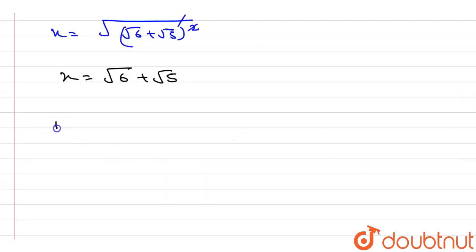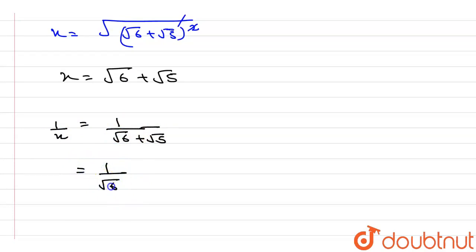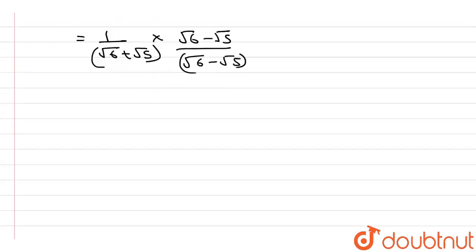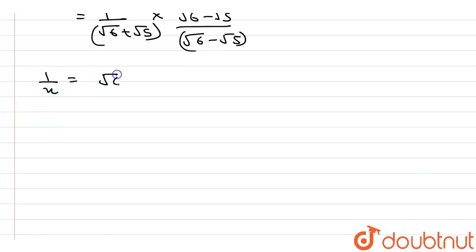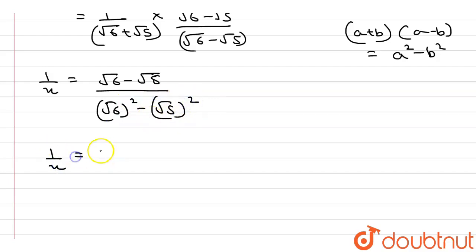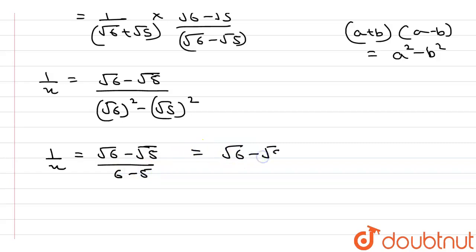Now we have to find the value of 1 by x. So 1 by x equals 1 divided by (root 6 plus root 5). We need to rationalize, so we multiply by (root 6 minus root 5) divided by (root 6 minus root 5). The denominator uses the (a + b)(a − b) formula, which gives a² minus b², so we get root 6 squared minus root 5 squared equals 6 minus 5 equals 1. Therefore, 1 by x equals root 6 minus root 5.